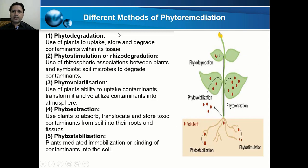There are different methods of phytoremediation. In phytodegradation, plants uptake, store, and degrade contaminants within their tissues. In phytostimulation or rhizodegradation, the rhizospheric association between plants and symbiotic microbes is used to degrade contaminants — plants utilize their roots in a symbiotic relationship with microbes, and together they degrade different contaminants.